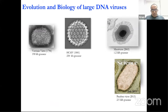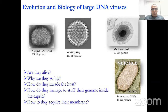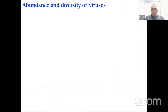Kiran briefly describes his lab's research, which focuses on understanding the evolution and biology of large DNA viruses. They use vaccinia virus, mimivirus, and pandora viruses discovered about seven years ago as laboratory prototypes. Key questions they address include whether viruses are alive, why they are so large — some bigger than bacteria — how they invade the host, and how they package protein and genome.